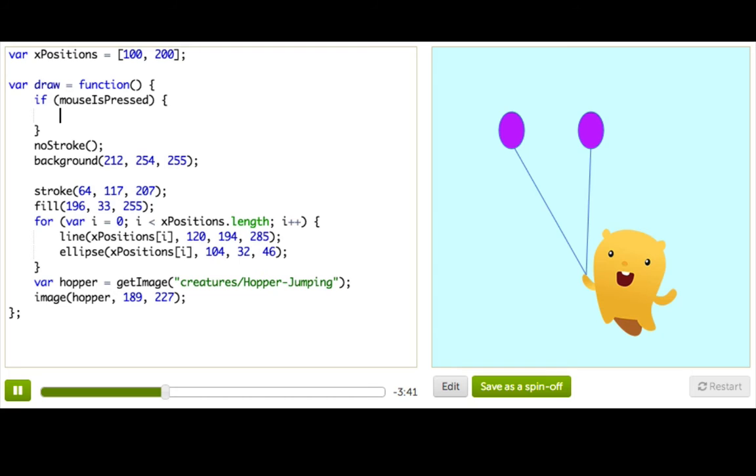Well, I'll show you one way that we could do this. So we can say xPositions bracket 2 equals mouseX. All right. And let me just show you that this works. I clicked, and ta-da! I got a balloon.